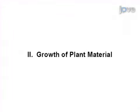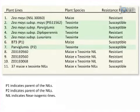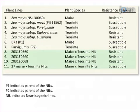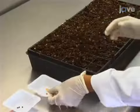To begin, select plant lines for inoculation and screening. As shown here, two maize lines, five teosinte lines, and forty maize-teosinte cross lines with uncharacterized resistance to U. maydis were used for this study.